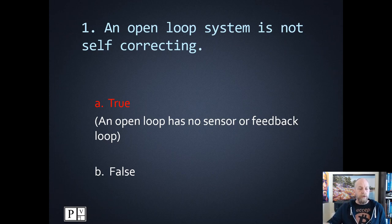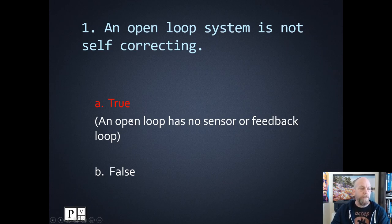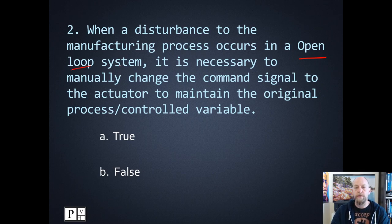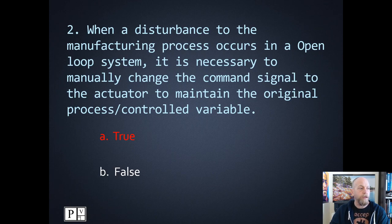I'll try to keep the pace up so we can get through this in a decent manner. Number two: when a disturbance in the manufacturing process occurs in an open loop system, it's necessary to manually change the command signal to the actuator to maintain the original process control variable. An open loop system is basically a manually controlled system — those two things look like they are the same. Number two is true.